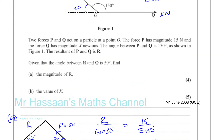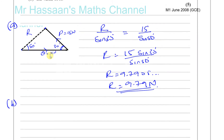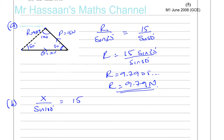Part B says find the value of X. X is the magnitude of force Q. To find X, we can again use the sine rule. We could use the cosine rule since we know R is 9.79, but it's easier to use the sine rule because the third angle in the triangle is 100 degrees — since 50 plus 30 is 80, and angles in a triangle sum to 180. So I can say X over sine 100 equals 15 over sine 50. It's better to use the values given directly in the question, so we use 15 over sine 50.